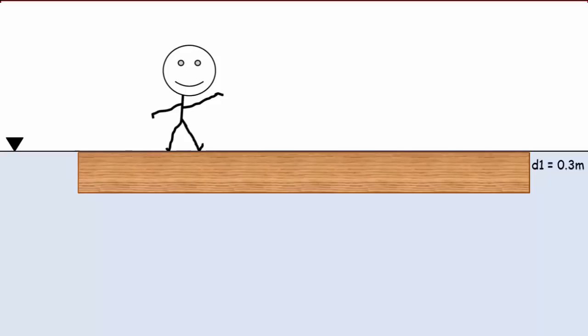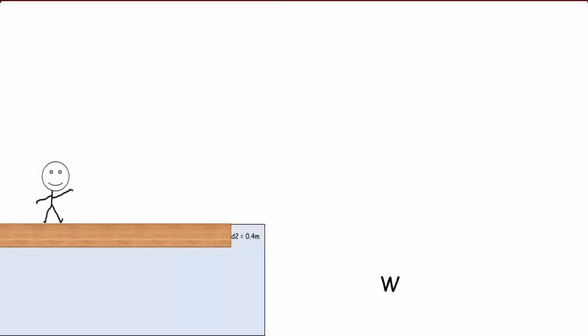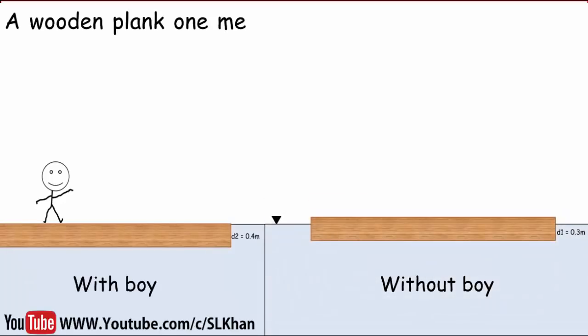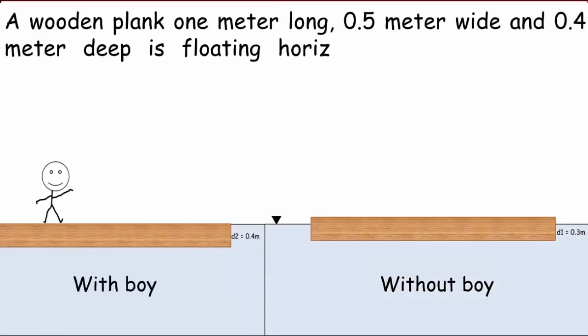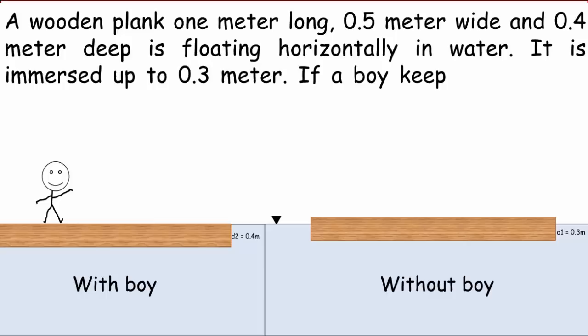Now if you keep standing a boy on this plank, it drowns up to 0.4 meters. Just find the weight of the boy in kilograms, and consider the weight equals mass, don't challenge it over here. Give this problem a try when you are done then watch the video for a solution.